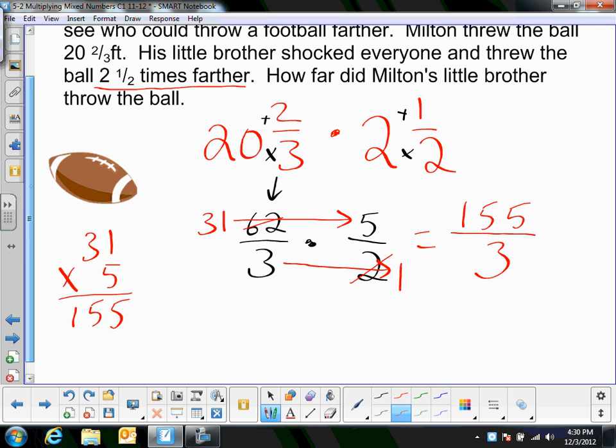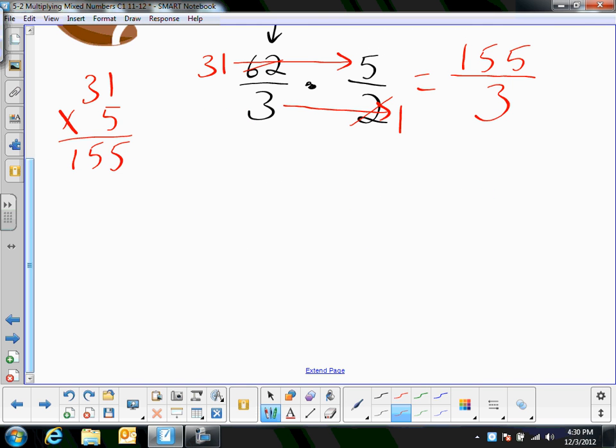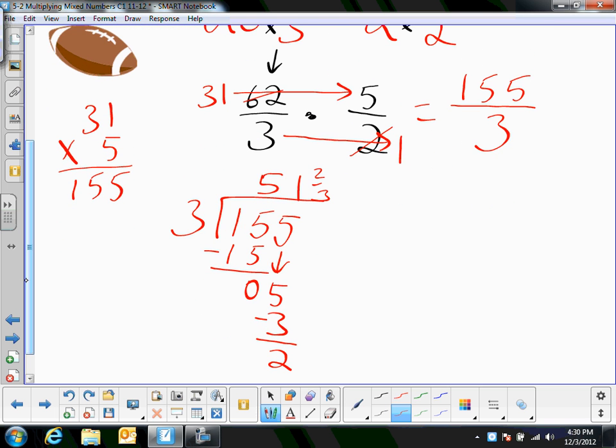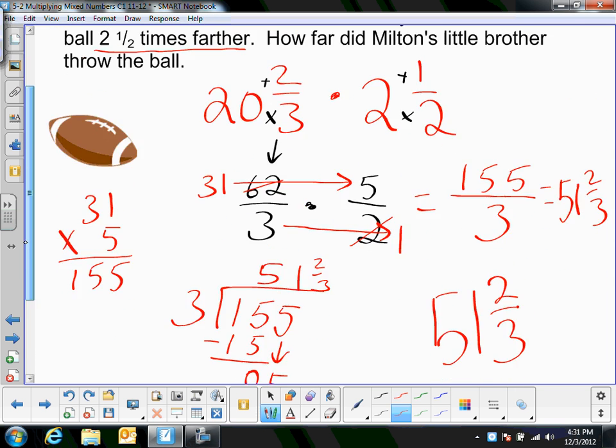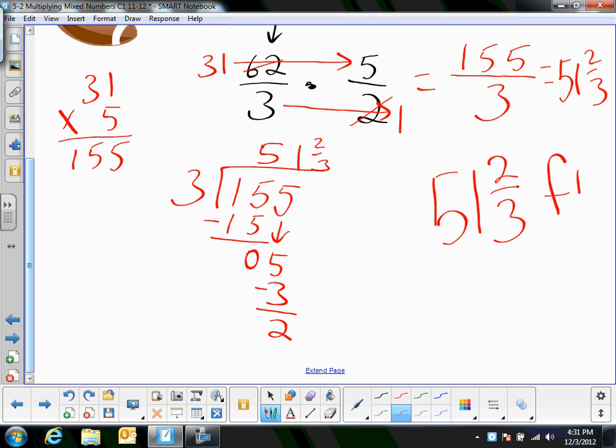Now, I have to turn it back into a mixed number. So, I'm going to do 155 divided by 3. 3 goes into 15, 5 times. That's 15. You get nothing as your remainder. Bring down your 5 and 3 goes into 5 once. That's 3 and you subtract and you get 2. So, it would be 51 and 2 thirds. So, 155 thirds is 51 and 2 thirds. Now, I'll write down here. 51 and 2 thirds because the answer is, I believe, in feet. 51 and 2 thirds feet.